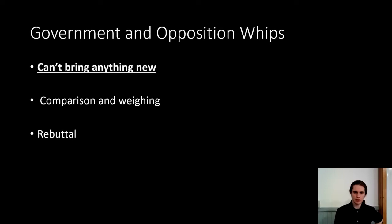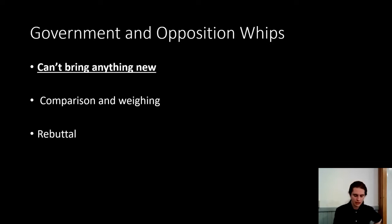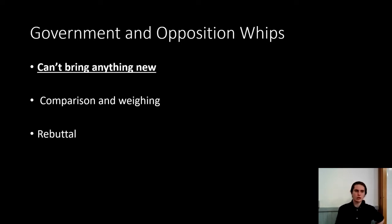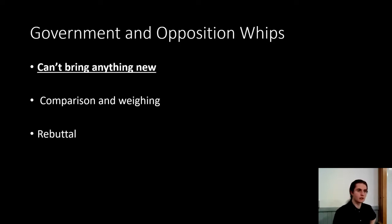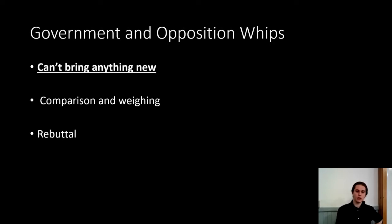Finally, we move into the last two speakers: the government and opposition whips. The crucial thing about the whips is they cannot bring anything new. This is because if the opposition whip were allowed to bring anything new, there would be no one speaking after them to rebut it, which would not be fair on the debate. To make it fair between government and opposition, the government whip runs under the same rules. Instead, what you are going to do is compare arguments — tell me why the arguments already brought up by your partner who just went are better than everything else on the table. You can strengthen them, give examples to support them, but you cannot bring in new arguments. You can also take down opposing arguments and explain why every other argument on the table was less valid.